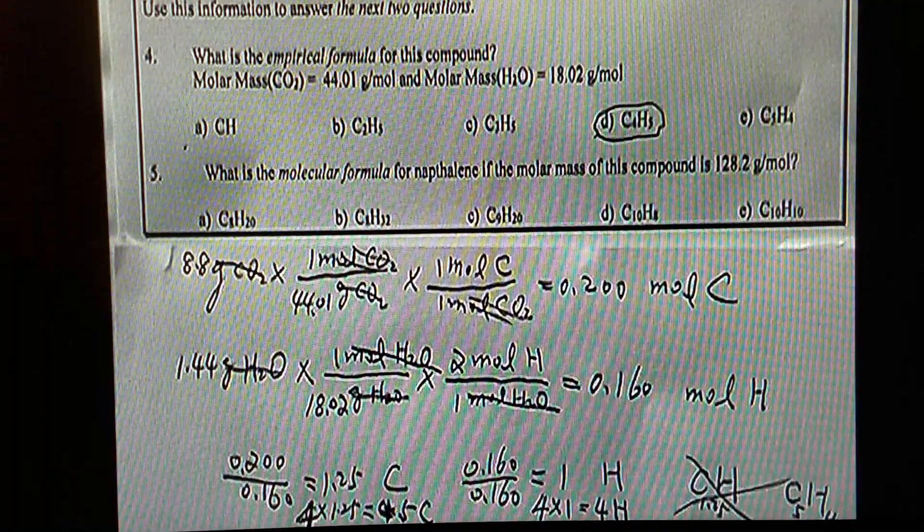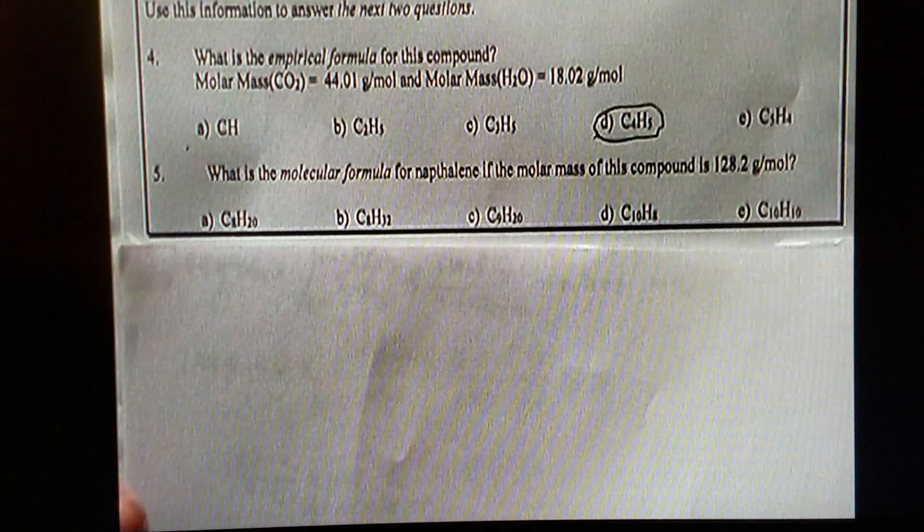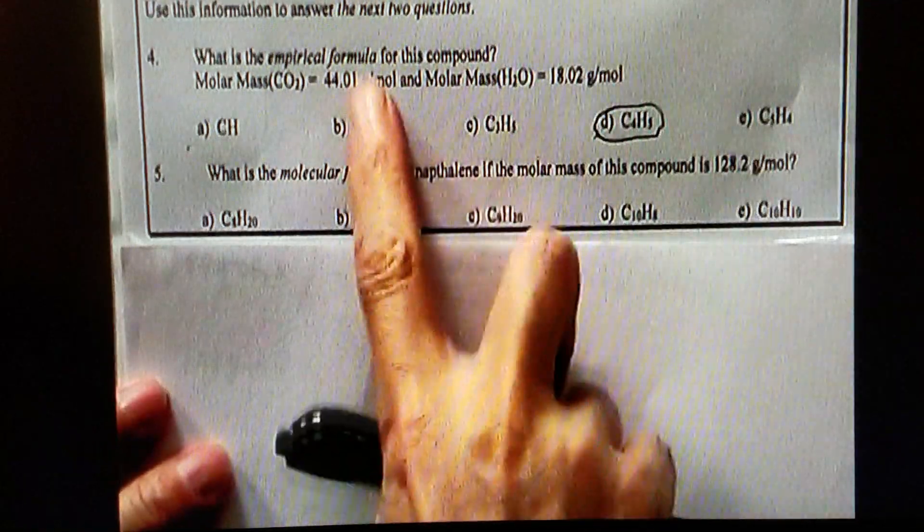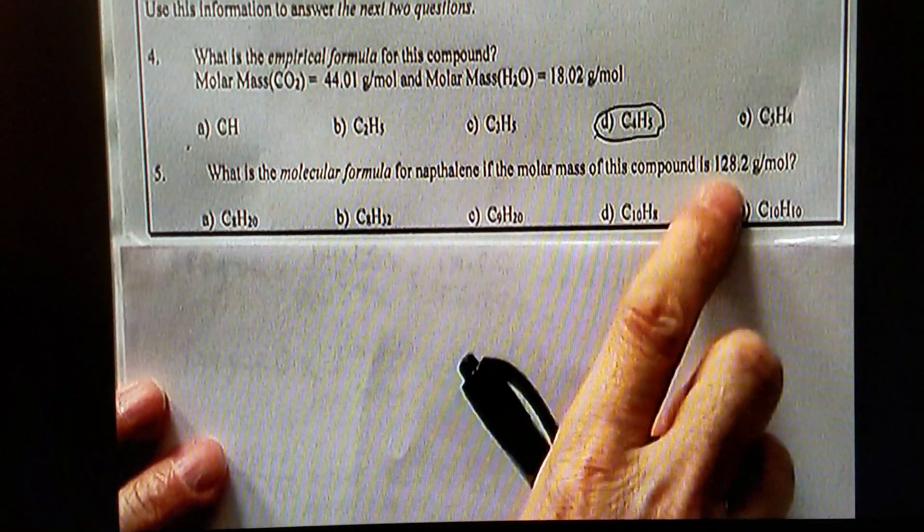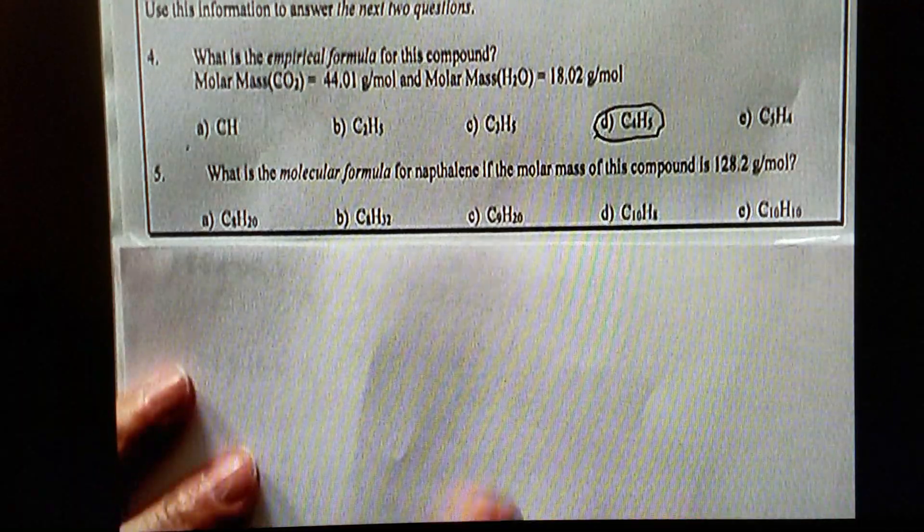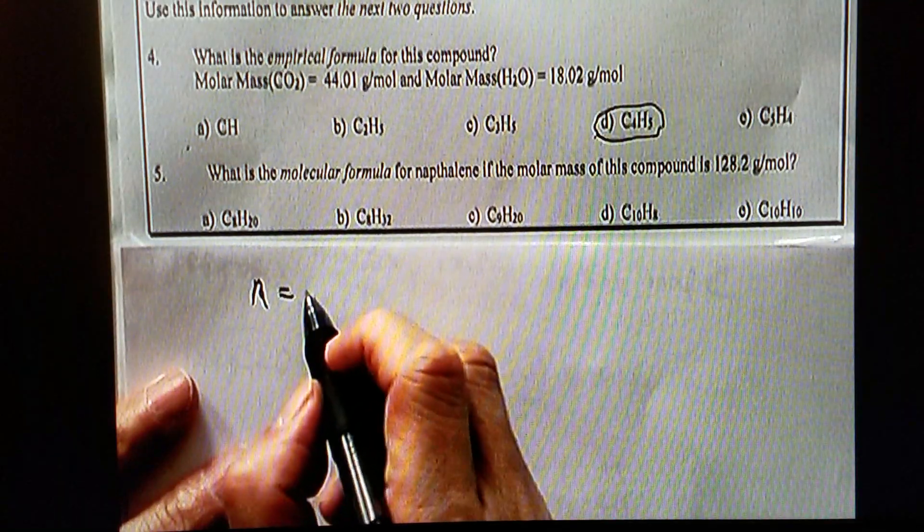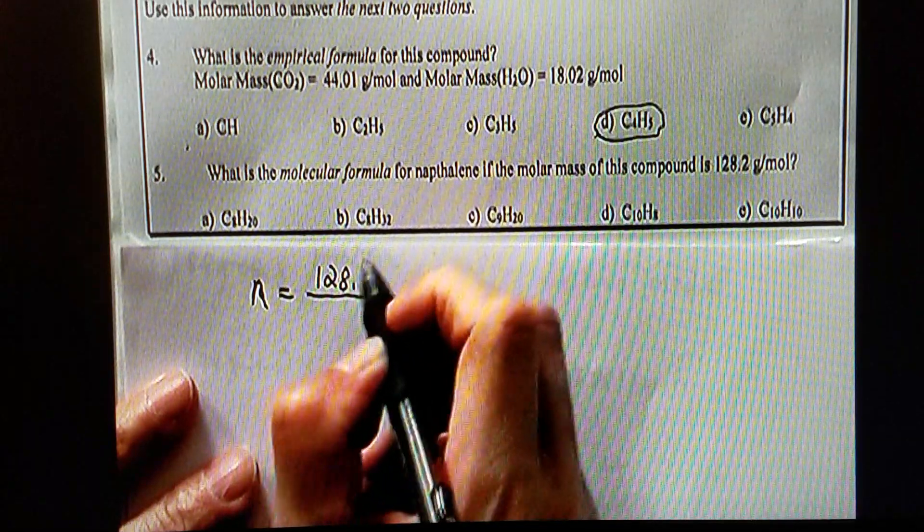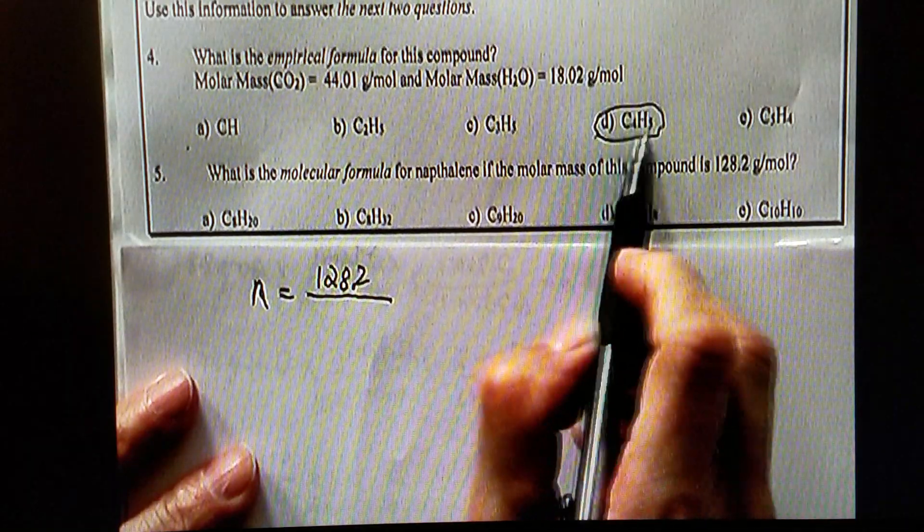And now, for question number 5. We already found out the empirical formula, which is this one. And we just need to find out the molecular formula. And we know the molar mass. In order to do so, we have to find the multiples, n. We have to find out what n is.